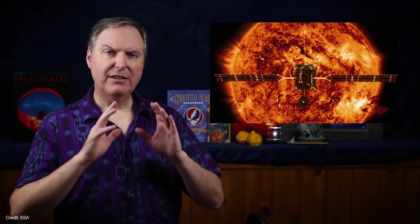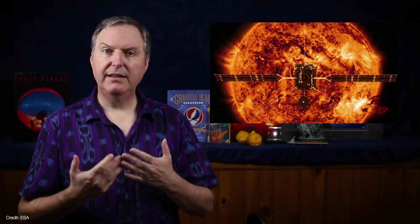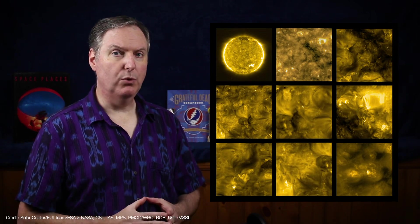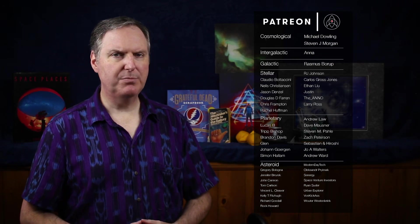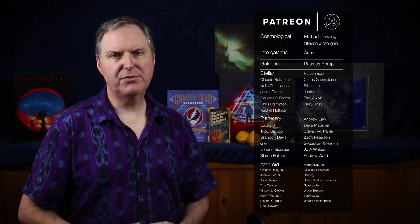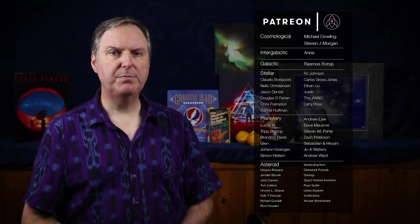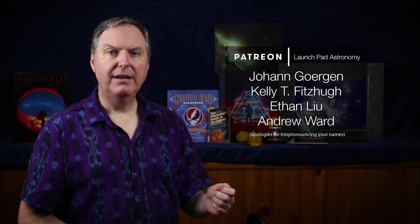And now it's been joined by ESA's Solar Orbiter, which orbits a little farther away. But, unlike Parker, it will get just close enough to take the closest images of the Sun. In fact, ESA just released their first set of images from Solar Orbiter and I made a video about them and the Solar Orbiter mission. So if you haven't seen that one yet, I'll meet you over there when we're done here. My thanks as always to my Patreon supporters for helping to keep Launchpad astronomy going. And I'd like to welcome my newest patrons Johan Gergen, Kelly T. Fitzhugh, Ethan Liu, and Andrew Ward.